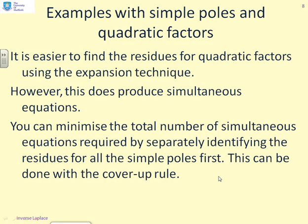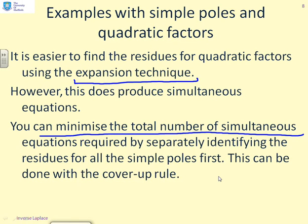What happens when you get slightly more complicated problems — not just a quadratic factor in the denominator, but also some simple poles? You're going to need to use the expansion technique to solve for the numerator of the quadratic factors, which will give some simultaneous equations. However, I'd recommend not using the expansion technique to identify all the poles at once, because you'll end up with a lot of simultaneous equations and cumbersome algebra. You can minimise the total number of simultaneous equations by first identifying the residues for all the simple poles using the cover-up rule. The following two examples will demonstrate this.